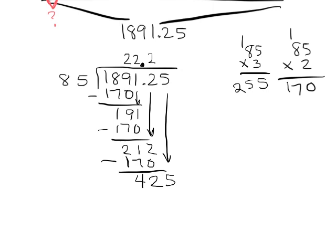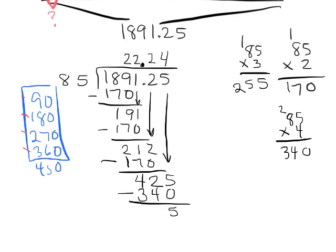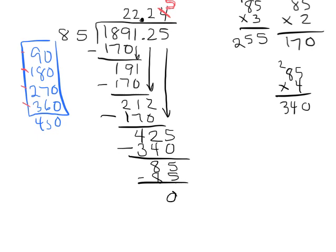Dropping the 5 gives us 425 hundredths. Estimating with 90s: 90, 180, 270, 360, 450 — I'll try 4. 85 times 4: 4 times 5 is 20, 4 times 8 is 32 plus 2 is 34, so that's 340. Subtracting: 425 minus 340 is 85, meaning we could go one more time. I'll bump the digit up to 5, subtract another 85, and we get a remainder of zero.